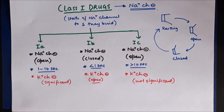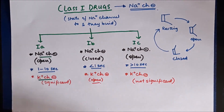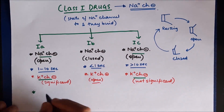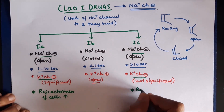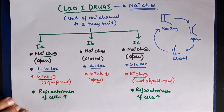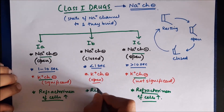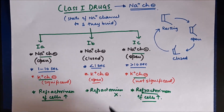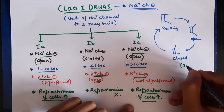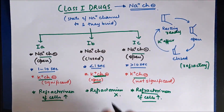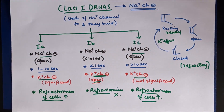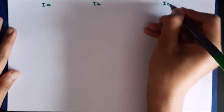These drugs affect sodium and potassium channels and therefore have an effect on the refractoriness of cells. Class 1a and Class 1c drugs both block sodium and potassium channels, so they increase the refractoriness of cells. Class 1b drugs open potassium channels and therefore do not have a significant effect on refractoriness. When sodium channels are in the closed state they are refractory, and to return to the ready state they require potassium reflux, which Class 1b facilitates.